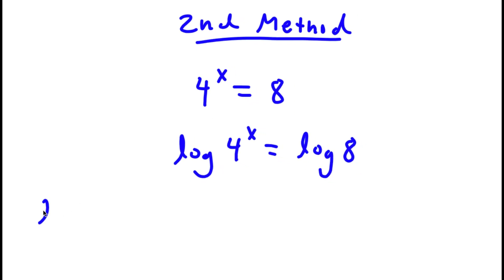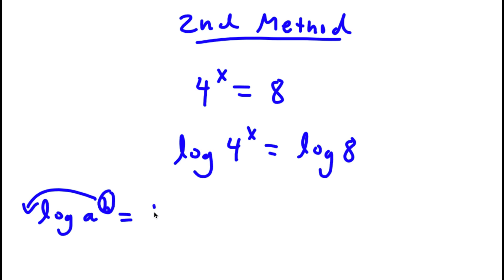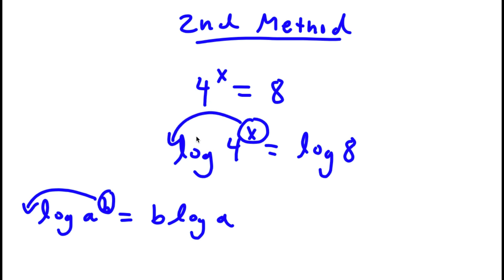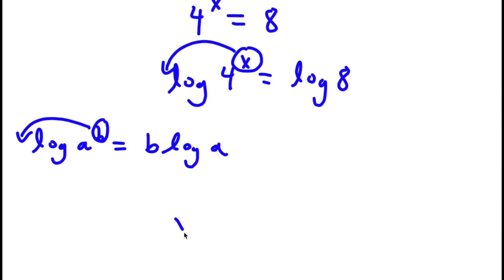Now, if I have something in the form log a to the power of b, I can actually move this exponent b to the front. So this is going to equal b times log a. So in this case, for log 4 to the power of x, I can move x to the front, so that's going to equal x times log 4, which is equal to log 8.